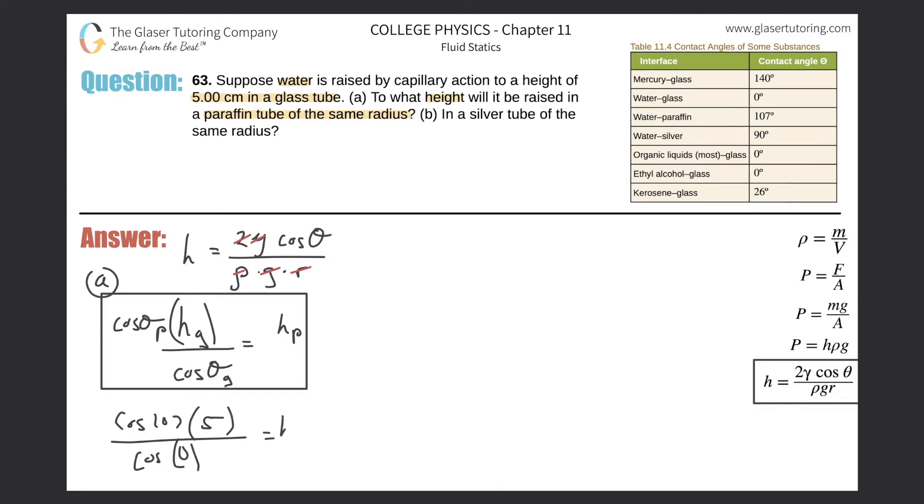And now all I have to do is plug this into my calculator to find the height reached in a paraffin tube. So cosine of 107 times five divided by cosine zero, that's just one. So here we have a negative number, negative 1.46, and that's in centimeters.